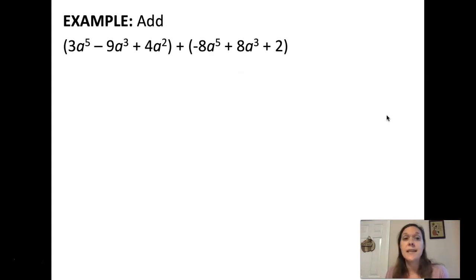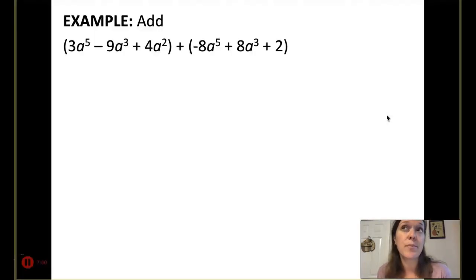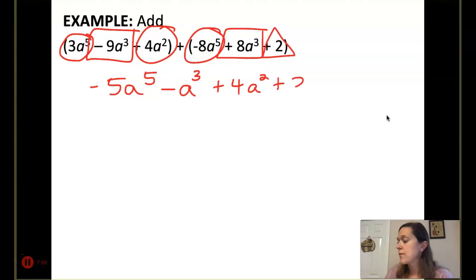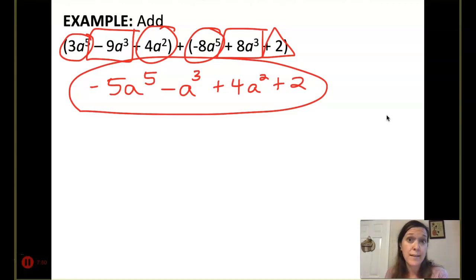Now our last two examples are adding and subtracting. Adding is just as simple as what we just did, combining your like terms. I could ignore the parentheses and look for like things. I have an a to the fifth, here's an a to the fifth. Let's combine those to make negative 5a to the fifth. Negative 9a cubed plus 8a cubed is negative 1a cubed. 4a squared has no match, so that comes down to my answer. The constant of 2 also comes down. If I had to classify it, that's a quintic polynomial with four terms.